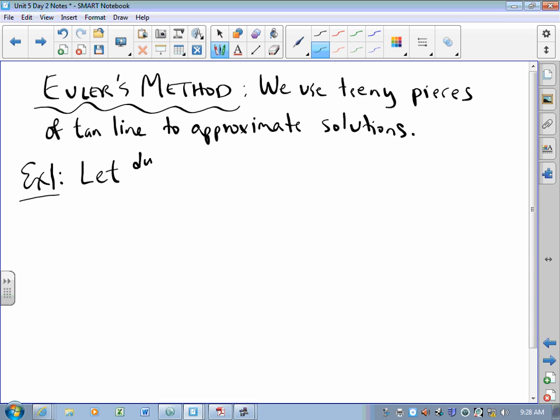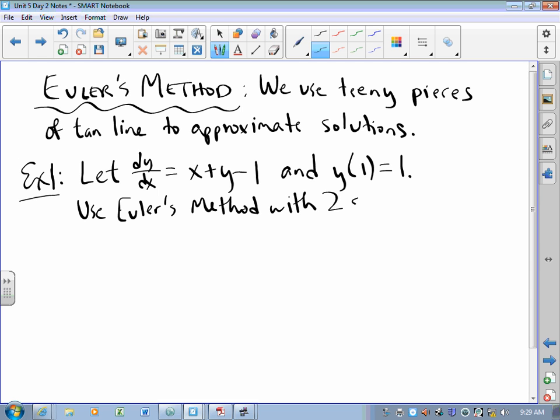We're going to let dy/dx equal x+y-1. And we're going to say that when x equals 1, y equals 1. Use Euler's method with two subintervals to approximate the y value at 1.2. That's the idea.